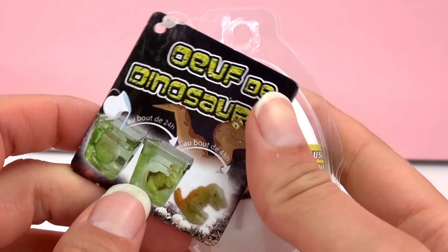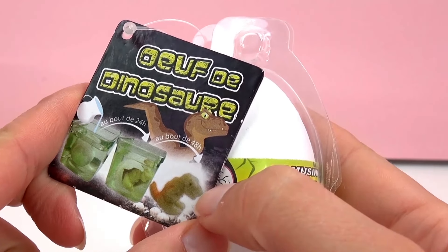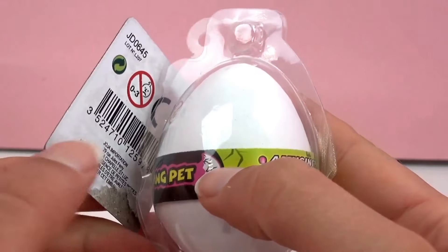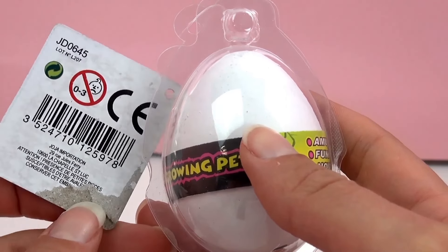You put water in with the egg, and then 24 hours later it will hatch. And then 48 hours later you have a little dinosaur. This is intended for kids ages 3 and up.